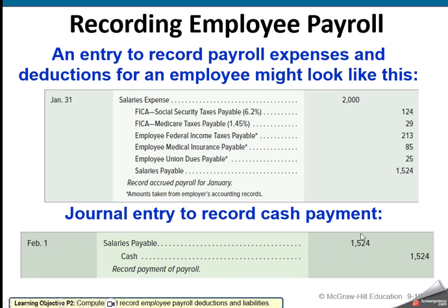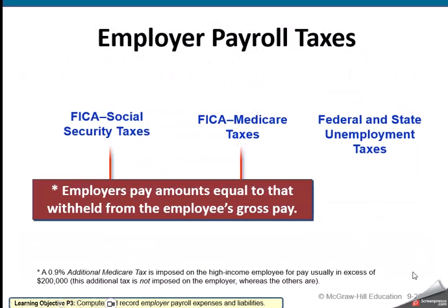The employer is going to match those payroll taxes — both Social Security and Medicare. Then the employer will also pay federal and state unemployment. The employee does not pay unemployment tax — just the employer does.